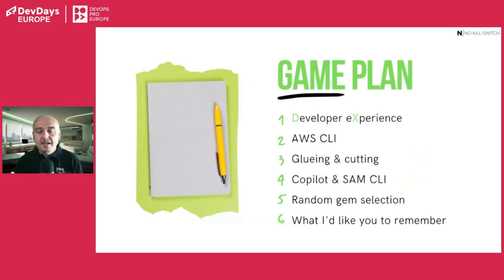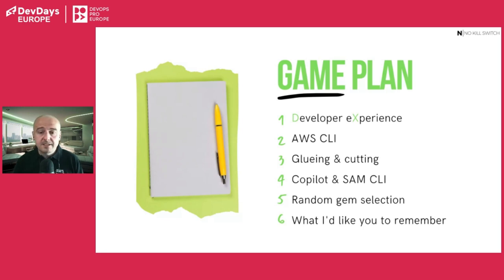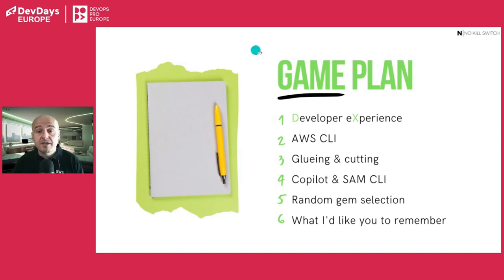Here's our game plan for today: we'll briefly talk about why CLI and developer experience, then some tricks with the AWS CLI. After that, interconnecting tools — gluing, filtering, smashing content from the cloud. I'll introduce tools that can speed up your development lifecycle like Copilot, SAM, or Skaffold. Last but not least, some random gem selections — things that don't belong to any other category but I find interesting — and we'll summarize with lessons learned.